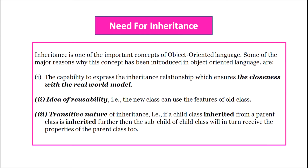Need for inheritance: Inheritance is one of the most important concepts of object-oriented programming. Some major reasons why this concept was introduced include its capability to express relationships that ensure closeness with the real world, the idea of reusability where a new class can use the features of an existing class, and the transitive nature of inheritance — if a child class inherits from a parent class which is already inherited from another base class, the sub-child will also receive those properties.